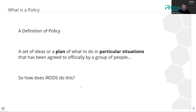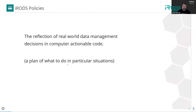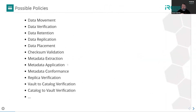When we talk about policy — one of my favorite words — we have a set of ideas or a plan of what to do in a particular situation. So we start talking at a higher level about a 'what' and then a 'when.' Once we get a group of people around the table to make some decisions, how are we going to capture that and effectively reflect that in real-world, computer-actionable code? When we talk about policies, this can mean something very broad.